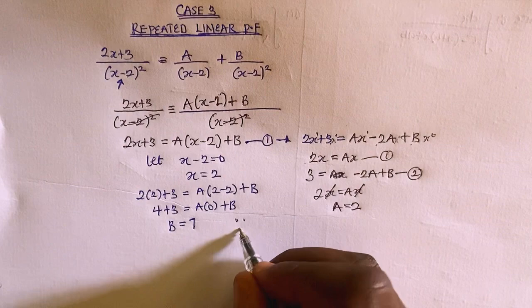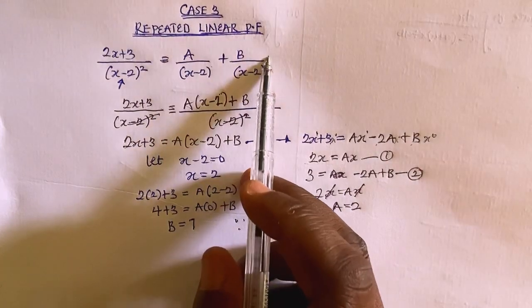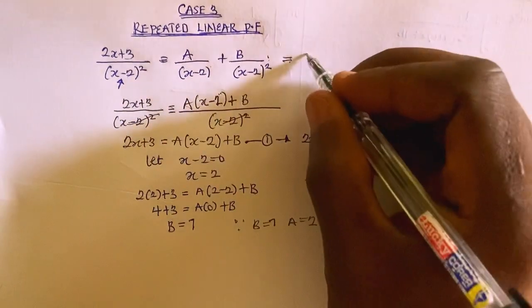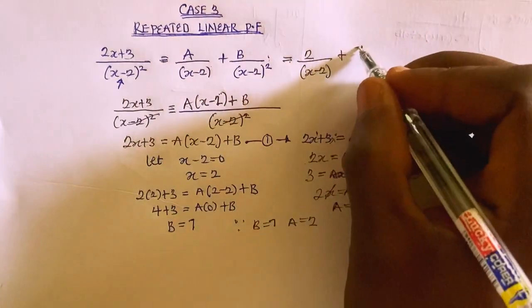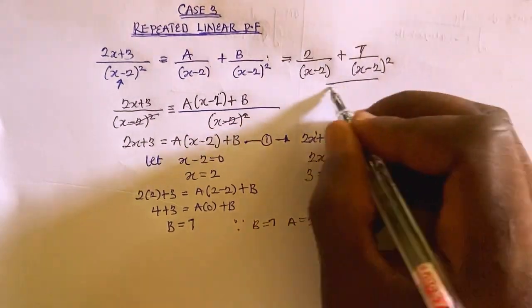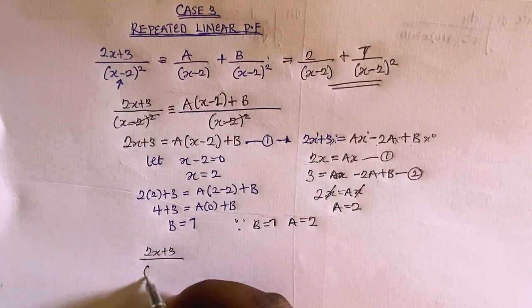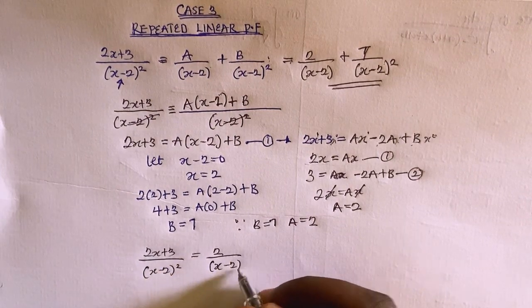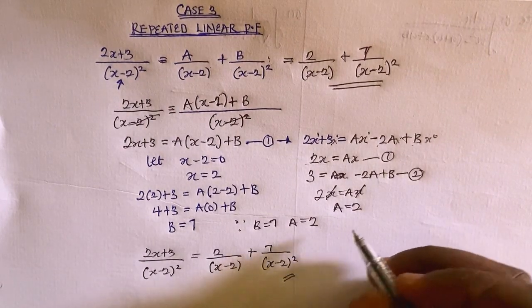Therefore B equals 7 and A equals 2. Coming back to the original fraction, the partial fraction decomposition is: (2x plus 3) divided by (x minus 2) squared equals 2 over (x minus 2) plus 7 over (x minus 2) squared. That's the final answer.